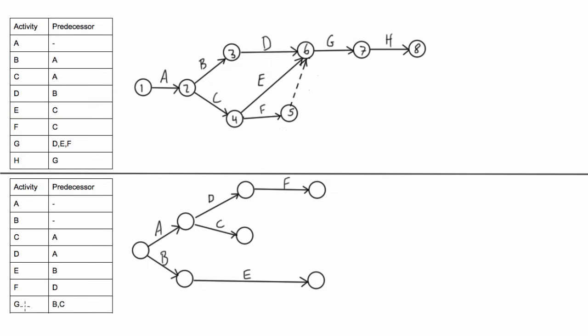And then lastly we would have activity G and its predecessors are B and C so we're going to need to come off of C and then connect B to this node with the dummy.